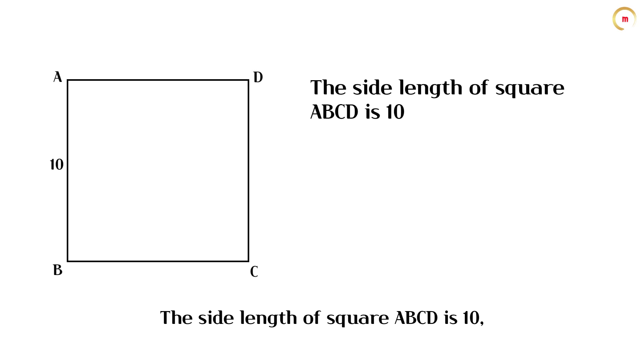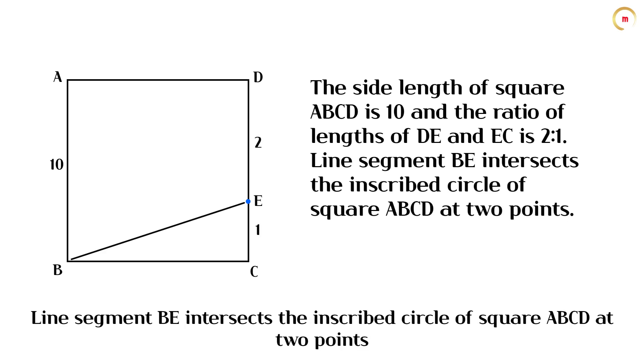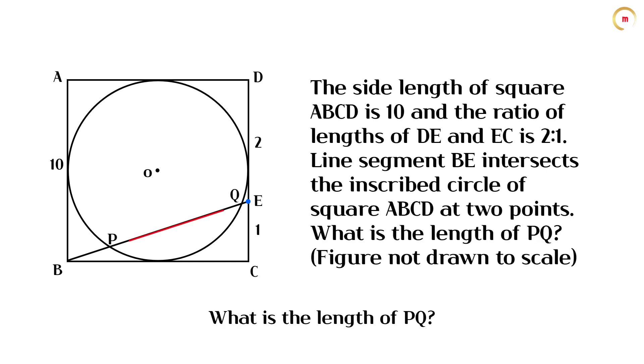The side length of square ABCD is 10, and the ratio of lengths of DE and EC is 2 to 1. Line segment BE intersects the inscribed circle of square ABCD at 2 points. What is the length of PQ?